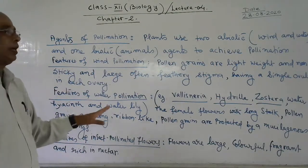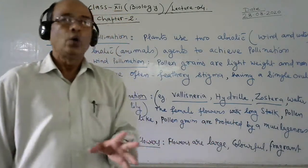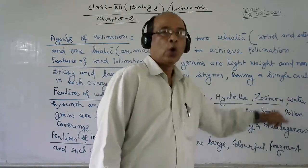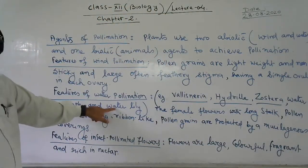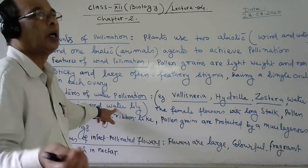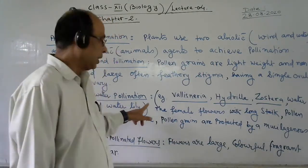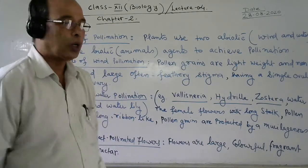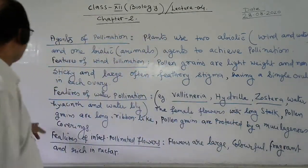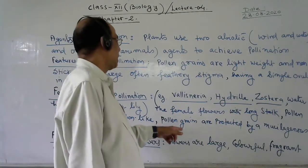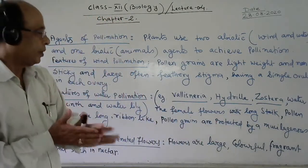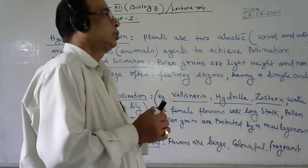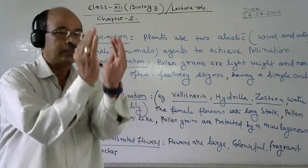The feature of water pollination — water pollination is called hydrophily. Aquatic plants such as Vallisneria, Hydrilla, and water lily are examples. The female flowers have long stalks, and the pollen grains are long, sometimes with ribbon-like structures. Pollen grains are protected by a covering to prevent wetting.